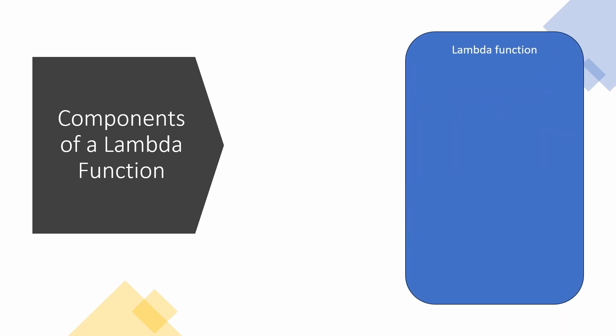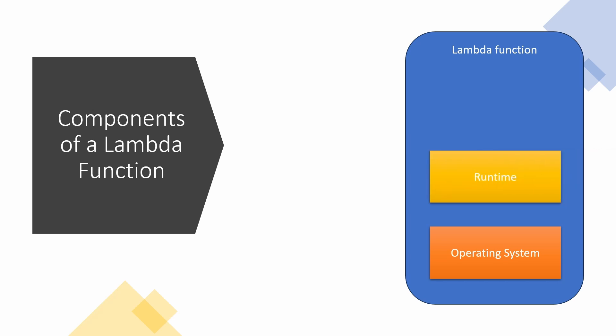A Lambda function consists of three components that allow the function to run. Operating system — the component that provides a platform for running the runtime and the handler. Runtime — the component that receives events from AWS Lambda service, executes the handler, and routes responses received from the handler back to the AWS Lambda service. Handler — the code that processes events and returns responses.